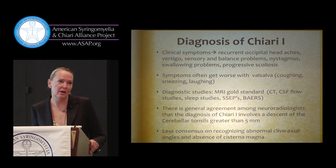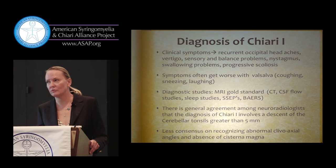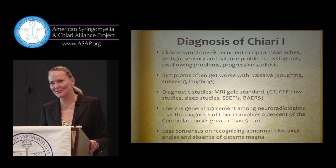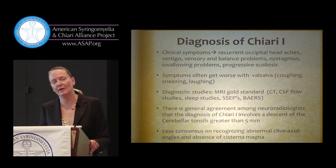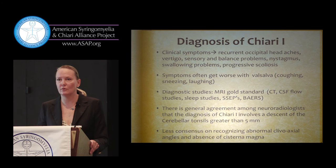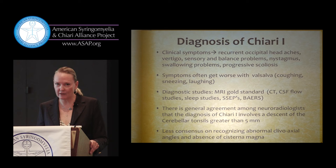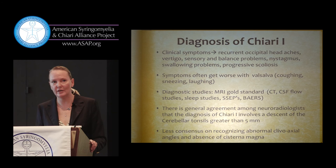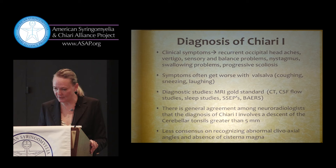There is general agreement among neuroradiologists and general radiologists that Chiari is a herniation of the tonsils below the foramen magnum of 0.5 centimeters or more. But neuroradiologists are not always focused on other things like the size of the cisterna magna or the angulation of the clivo-axial angle. So it's a good pick-up for radiologists to flag a potential Chiari, and then those used to dealing with this can evaluate further.